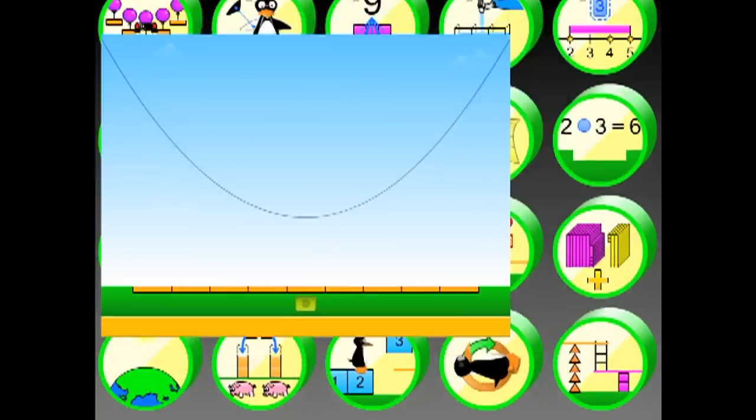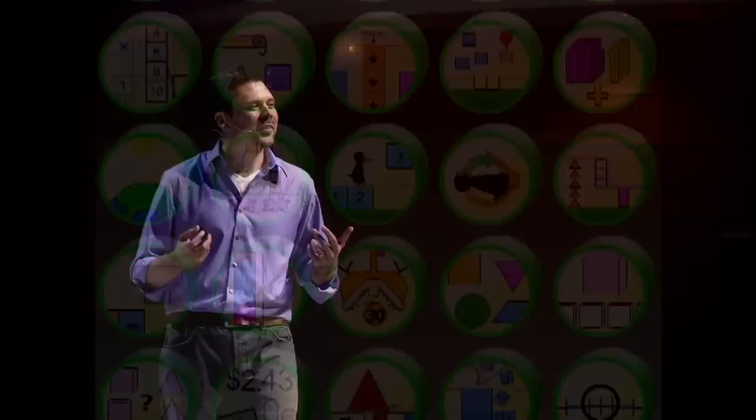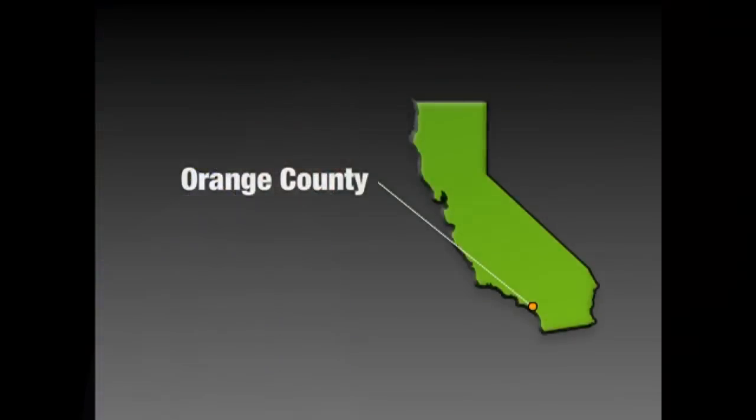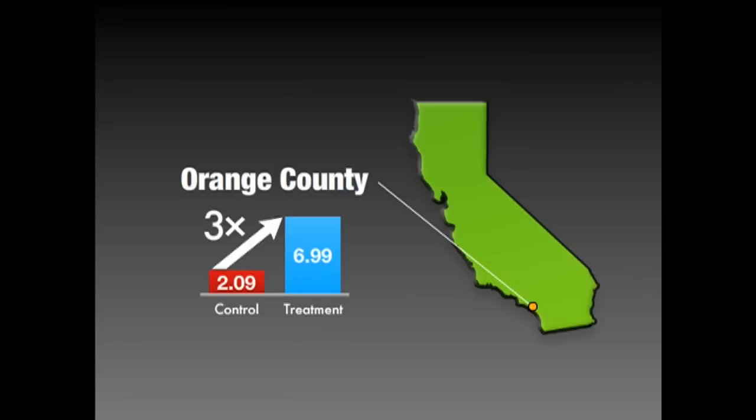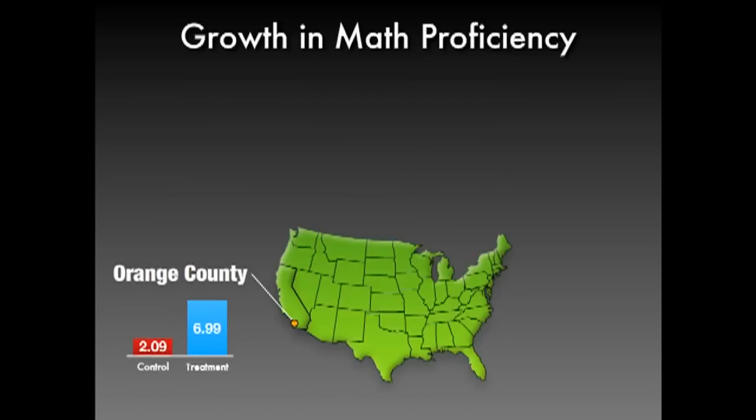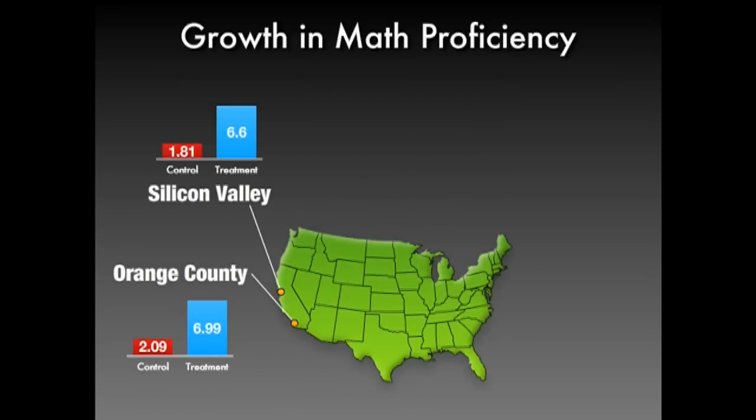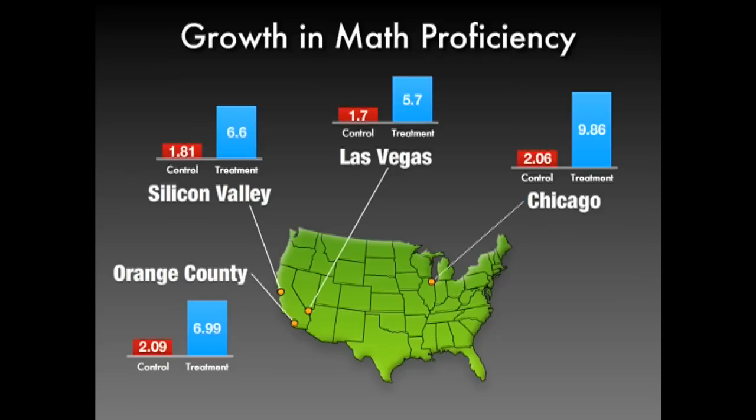We're basically able to boil all math down to: how do you help a little penguin across the screen? But does it work? UC Irvine recently conducted a study where they put these visual games into 106 schools in Orange County. After one year, we were able to triple the rate of growth in math proficiency. And last year we replicated this result in Silicon Valley, Las Vegas, Chicago, and Houston.